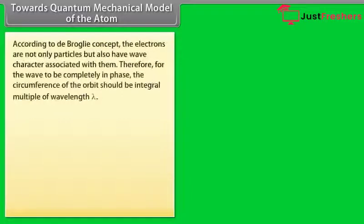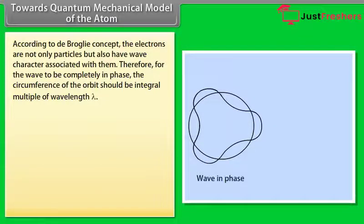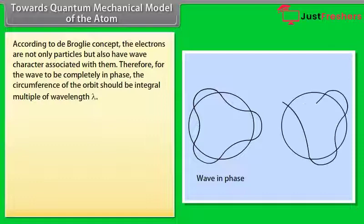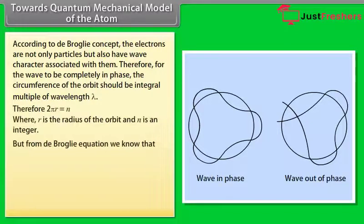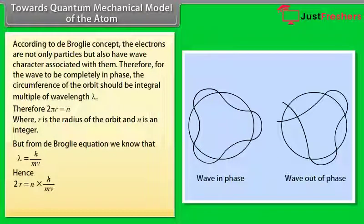According to the de Broglie concept, electrons are not only particles but also have wave character associated with them. Therefore, for the wave to be completely in phase, the circumference of the orbit should be an integral multiple of wavelength lambda. From the de Broglie equation, lambda equals h upon mv. Hence, 2πr equals n times h divided by mv, where mvr equals n times h divided by 2π.